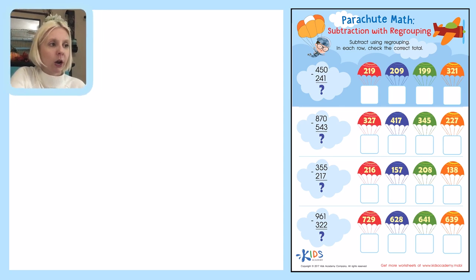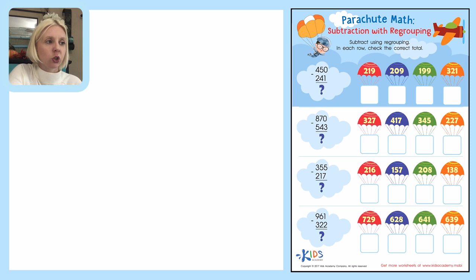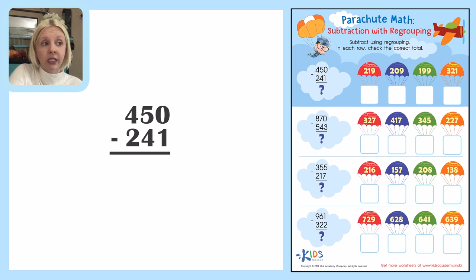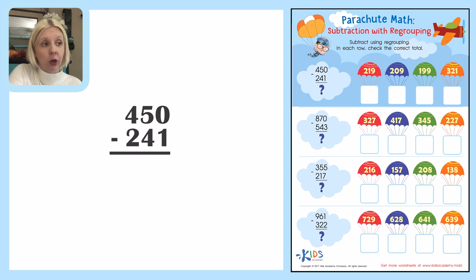So I'm going to write out the first one, which is 450 minus 241. I'm going to start in the ones place. I need to take one away from zero. Well, I can't do that, so this is where I'm going to need to regroup.